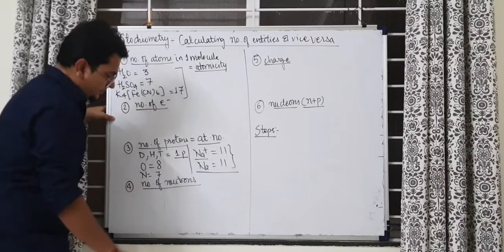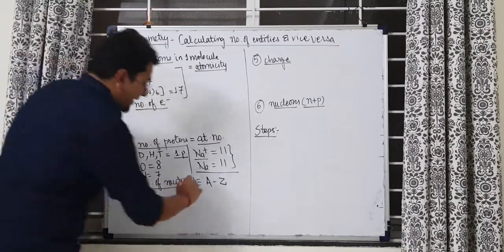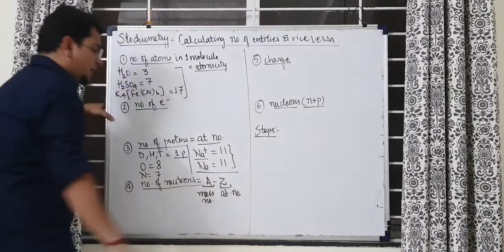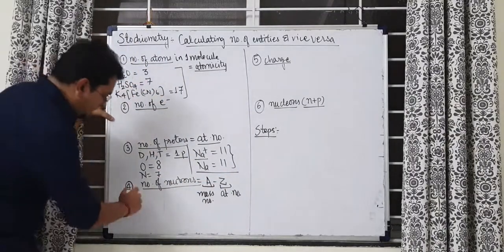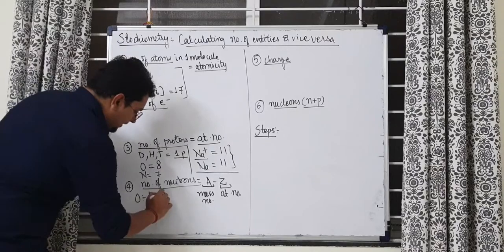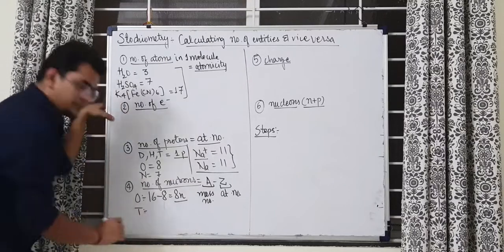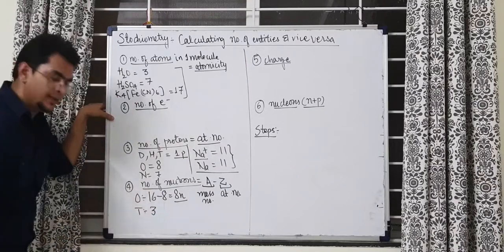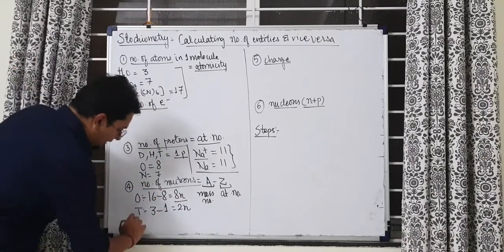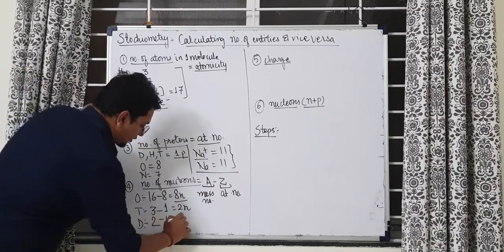How to get number of neutrons here? Very simple. Number of neutron is A minus Z. What is A? A is mass number. What is Z? Z is atomic number. Both these things you have to remember for every atom. For example, if I take oxygen, then for him the mass number is 16. Atomic number is 8. So, there are total 8 neutrons. If I take the example of tritium, tritium has a mass number of 3. Atomic number, as I discussed, is 1. So, in total there are 2 neutrons. Similarly, deuterium has mass number of 2, atomic number of 1, total 1 neutron.